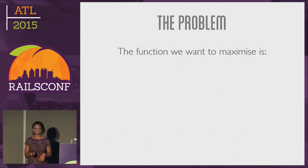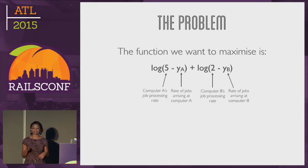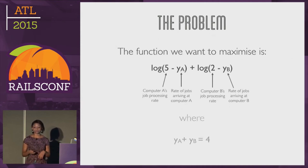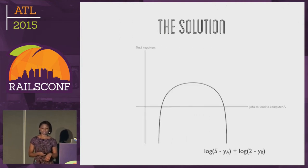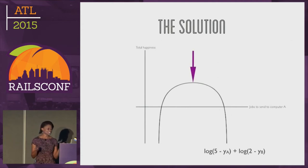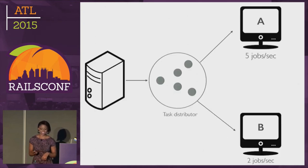So we want to maximise a function that combines the payoff functions of both computers, substituting in the processing rates of five and two, with the constraint that the total jobs arriving at each computer equals four. If you plot that function on a graph, we're trying to find the point where happiness in the system is maximised. When you solve for that point, you get that the number of jobs sent to A is three and a half, meaning half a job should be sent to B.